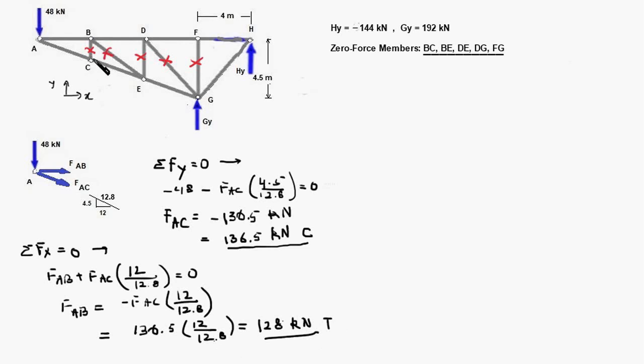When we did equilibrium analysis of joint A we found that member BC is zero force member and that also indicates that the force in AC will also be equal to the force in member CE so CE will also have a compressive force of 136.5 kilonewtons and the same argument holds good for the member EG which also would be having an internal force of 136.5 kilonewton compressive.